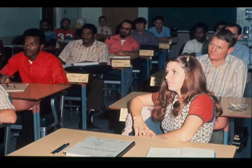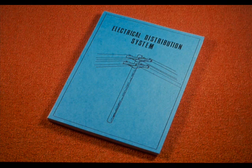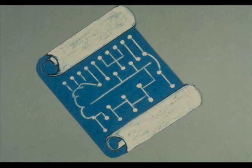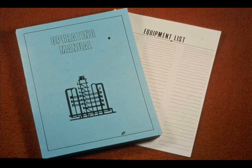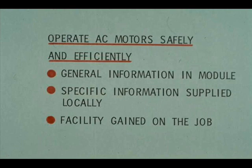You must learn some of these things on the job, but others you can learn from this module in the classroom. The module does not attempt to give you information about the electrical distribution system in your refinery or plant — it does tell you the kind of knowledge you should learn about your system. Nor does the module try to give you specific information concerning the electrical distribution system of your own area; it does tell you the kind of knowledge you should learn. The module discusses the meaning and use of nameplate data on AC motors, and the sort of information you may expect to find in equipment lists and operating manuals. Concerning the safe operation of AC motors, the module supplies general information. Specific information about specific motors must be supplied locally, and you can gain facility in the operation of AC motors only on the job.